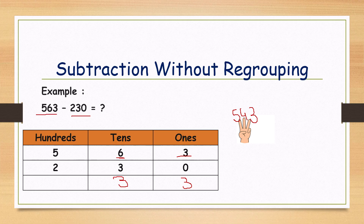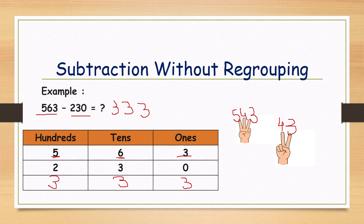Now we are moving to the hundreds place. What are the numbers? Five and two. Which is the big number? Five. Keep it in your mind five and open two fingers. Five before four, four before three. Then what is the final answer? Three hundred and thirty-three. This is the without regrouping example.